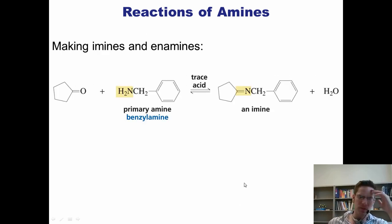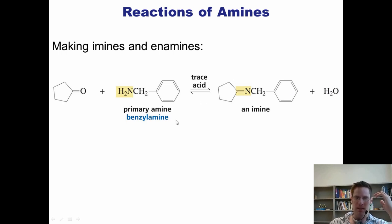As you may recall from Chapter 18, reacting an aldehyde or a ketone with a primary amine and trace acid gives this type of compound called an imine. Doing the same reaction with a secondary amine like this gives you this type of compound called an enamine. I love the word enamine because once again it sounds like the Spanish word enemigo, which means enemy. Are you an amigo or an enemigo? Are you an amine or an enamine?